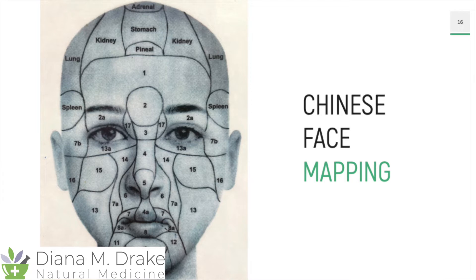I'm going to jump to this Chinese face map. As you can see, right there around the nose, number six, that is your small intestine. When you jump out to seven, that is the lung. And then dropping down below to the sides of the mouth, 11 and 12 is the large intestine. So this is really important to understand: it's the small intestine, the lung, and the large intestine, which includes the colon.